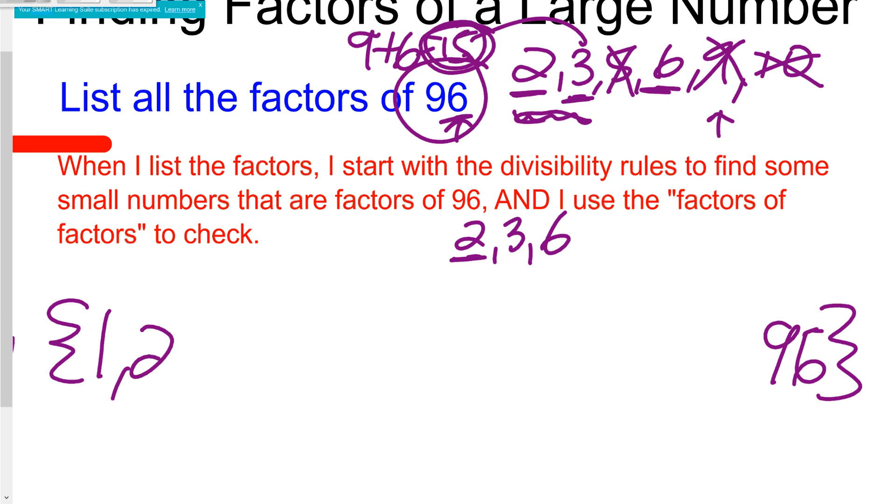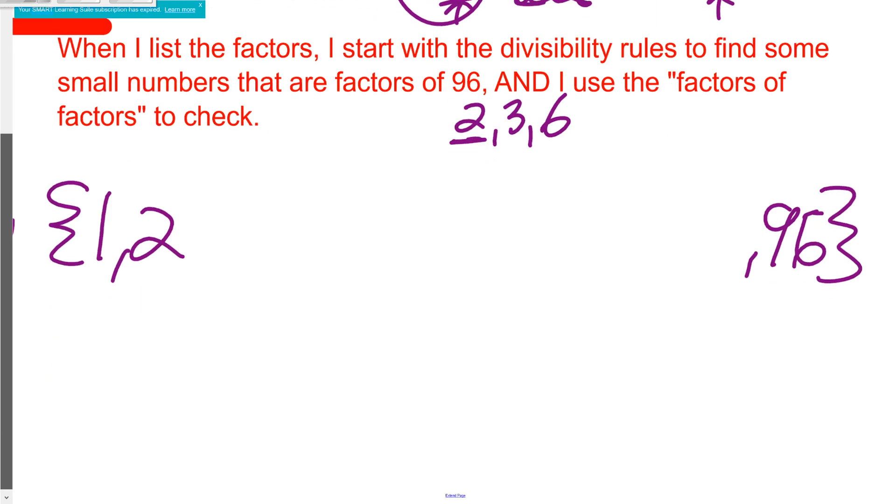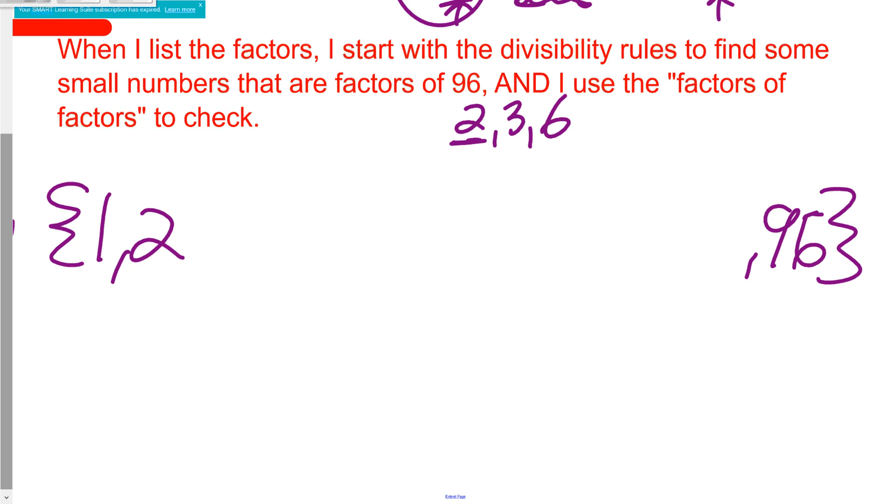So 2. Now the other issue is I need to figure out how many times does 2 times what gets 96. So I might do some division. 2 goes into 9 four times, 4 times 2 is 8, do my subtraction, bring down my 6, 2 goes into 16 eight times, so my answer is 48.